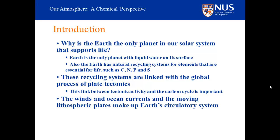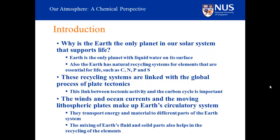The winds and ocean currents and the moving lithospheric plates make up Earth's circulatory system. They transport energy and material to different parts of the Earth system, where they are utilized in biological and physical processes. This mixing of Earth's fluid and solid parts also helps accomplish an important task: the recycling of the elements. Essential elements are released to the biosphere — the part of the Earth that supports life, including oceans, atmosphere, land surface, and soils — as rocks weather, volcanoes erupt, and nitrogen is made available from the atmosphere by chemical transformations stimulated by lightning discharge.